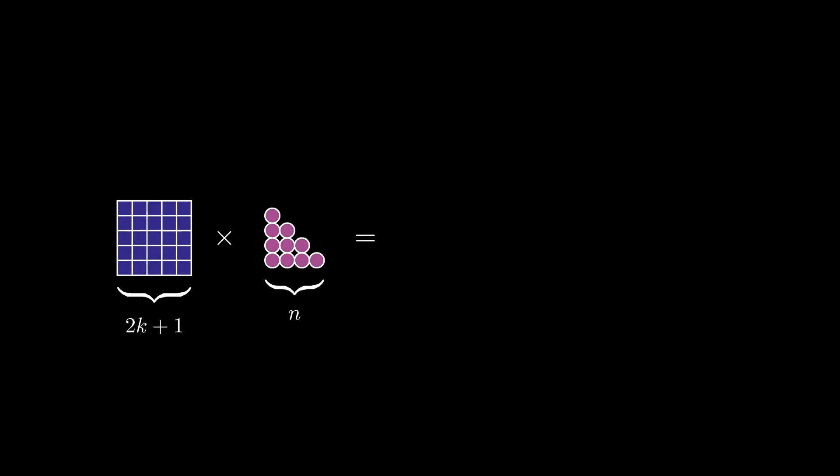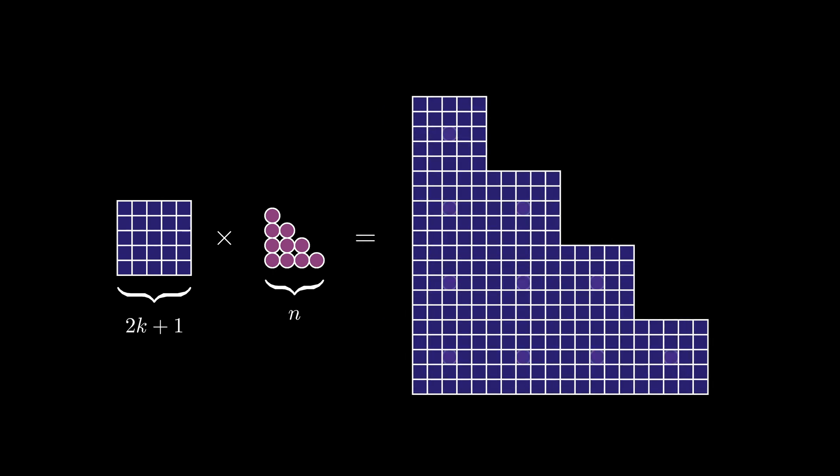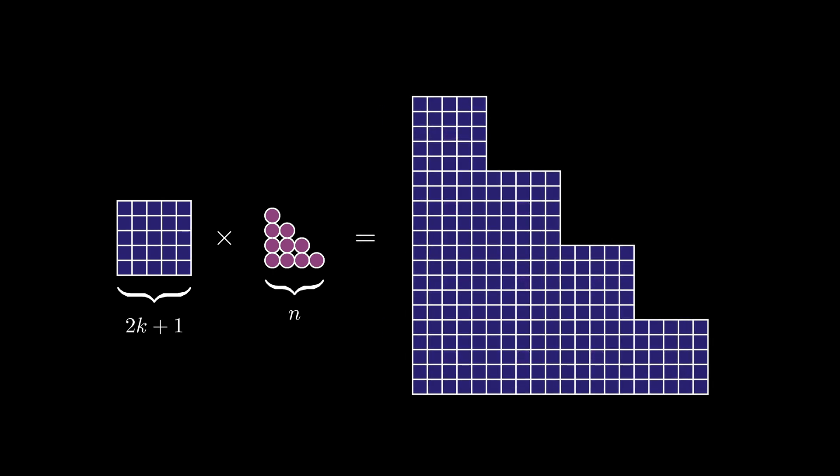When we multiply these two numbers together, the product can be represented by a triangular array of square arrays as pictured here. The number of small squares in the base is 2k plus 1 times n.